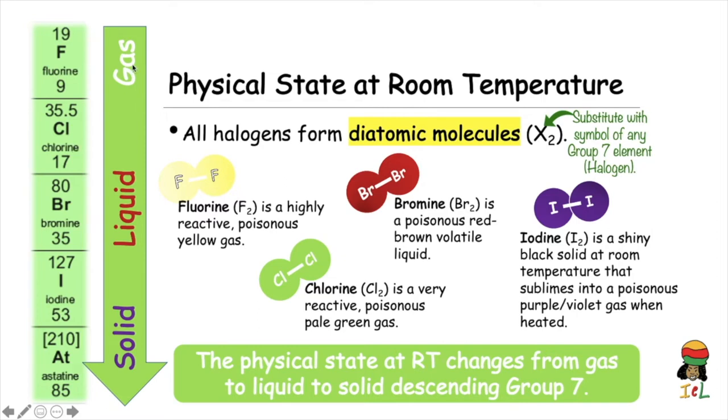Fluorine and chlorine are gases, bromine is a liquid, and iodine and astatine are solids.